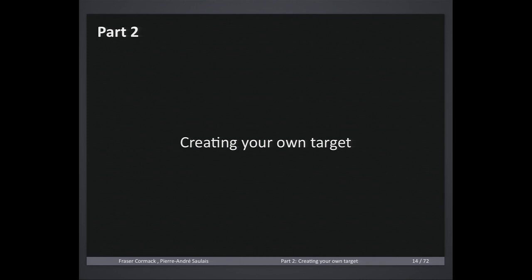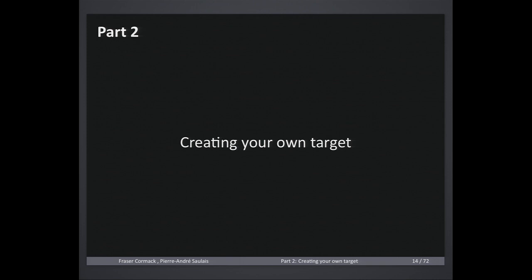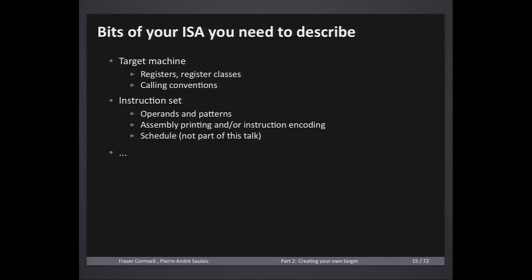Now let's get into how to create a target with LLVM. Before you begin, you need to know a lot about your target architecture: the registers and how they're subdivided, the calling conventions you adhere to, and most importantly the instructions. For every instruction you need to define its inputs and outputs, its semantics, how it looks in assembly, how it's encoded into binary, and more. So basically, you'll need to spend a few days or weeks reading your ISA manual.